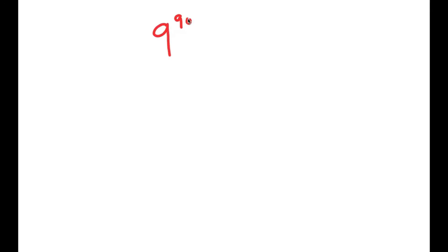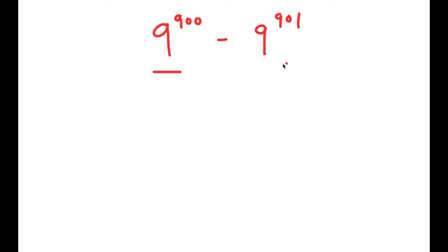In this video I'm going to be solving the problem 9 to the power of 900 minus 9 to the power of 901. To solve this I'm going to start by evaluating my terms. We have 9 to the power of 900 and 9 to the power of 901, and these two terms are pretty similar except that the exponent for 9 to the power of 900 is one less than the exponent for 9 to the power of 901.